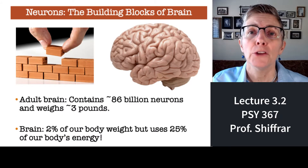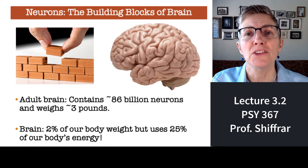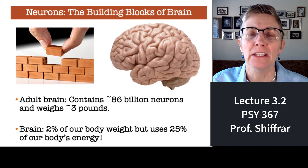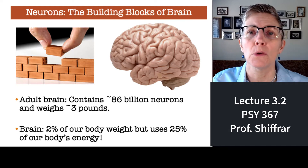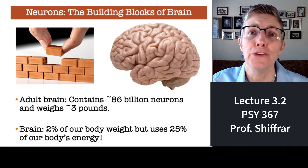Hi there. In lecture 3.2, I want to focus on the neurons. You can think of neurons as the building blocks of the human brain. Your brain has about 86 billion neurons, and they're all massively interconnected. It's one of the most complex structures known.